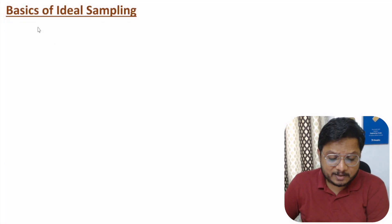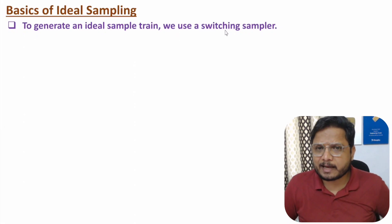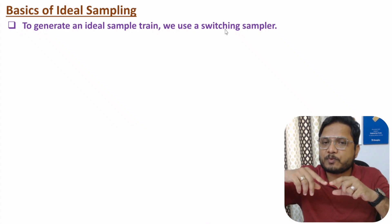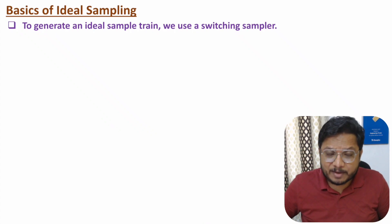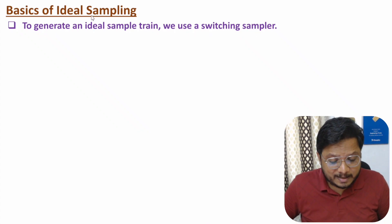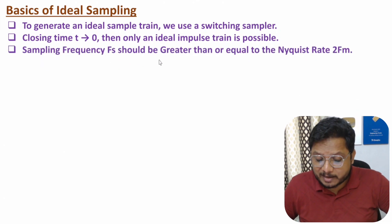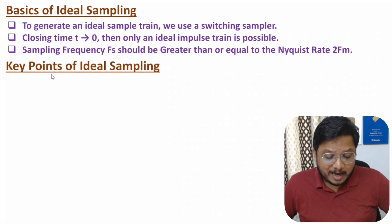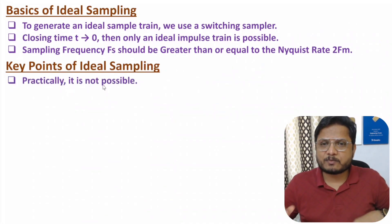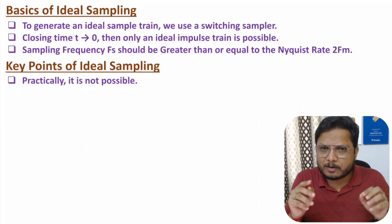Now let me discuss the basics of ideal sampling. To generate an ideal sample train, we use a switching sampler. Practically, it is not possible. But technically, if the switch closes for minimal time — almost towards zero — then one can say we have an ideal switching sampler, by which one can generate ideal sampling. The closing time t should go towards zero to generate an ideal impulse train, and sampling frequency fs should be greater than or equal to the Nyquist rate 2fm. A key point: ideal sampling is not practically possible because one cannot generate an impulse train with duration going towards zero. That's why it has high noise interference.